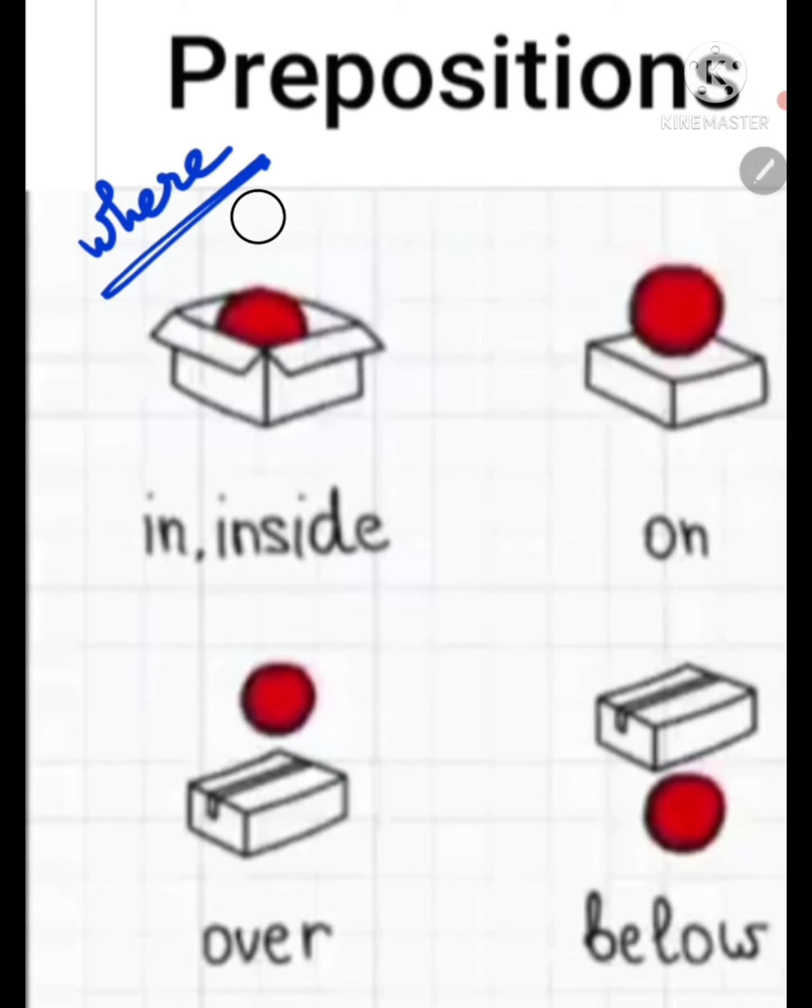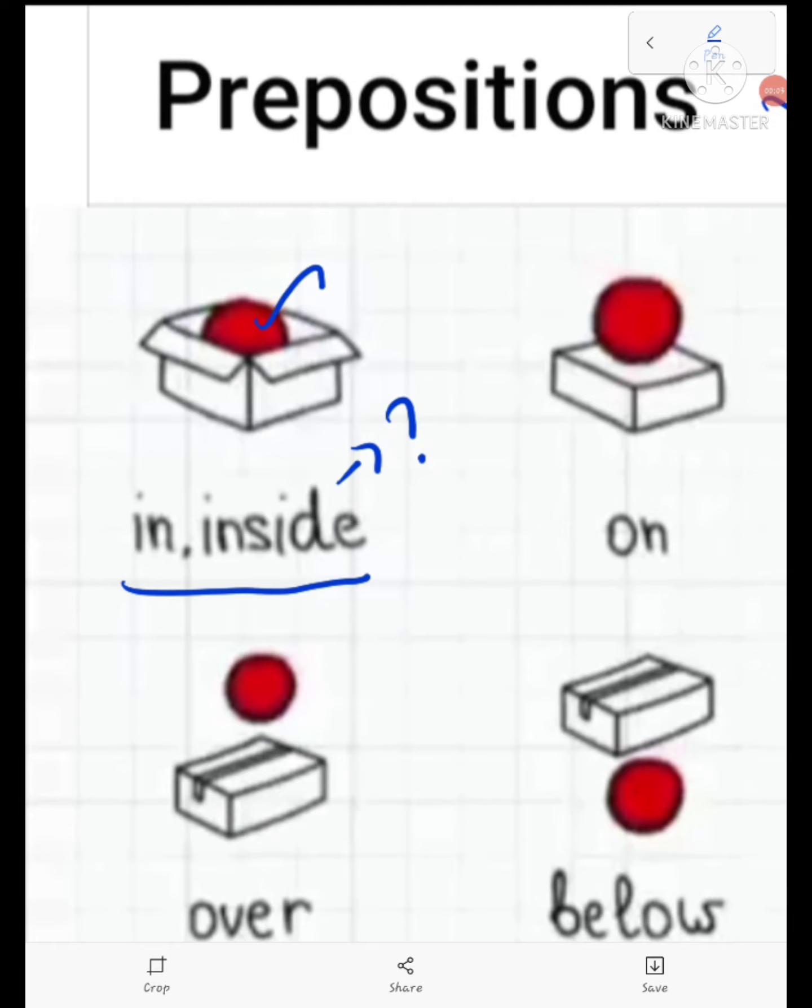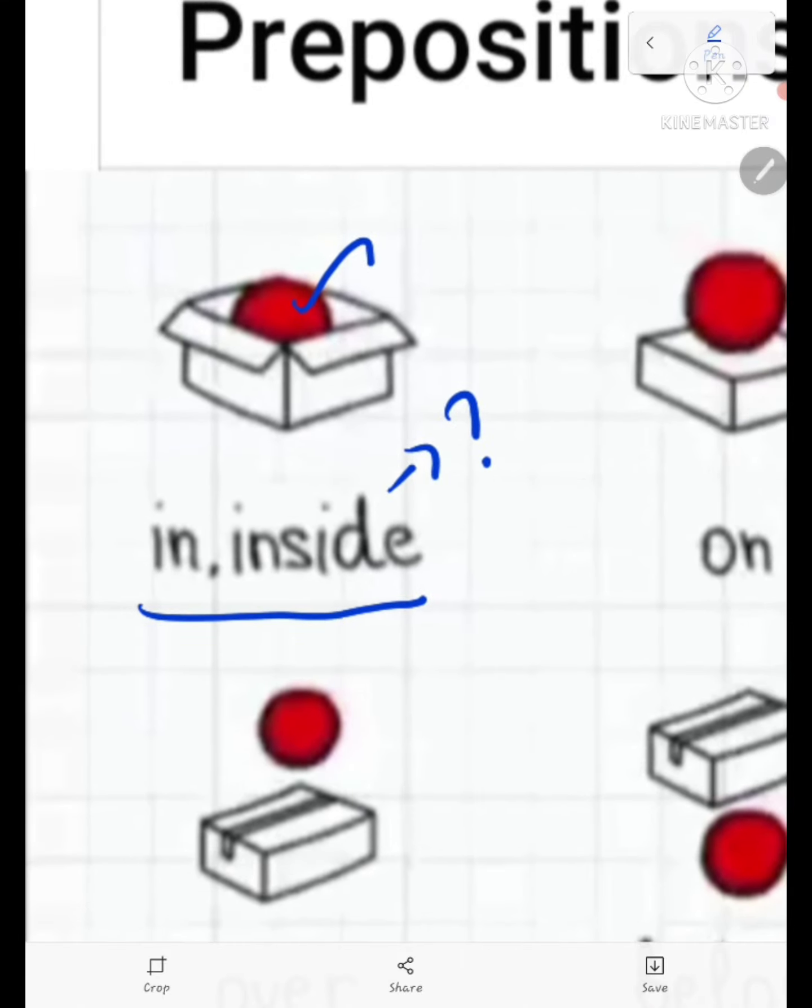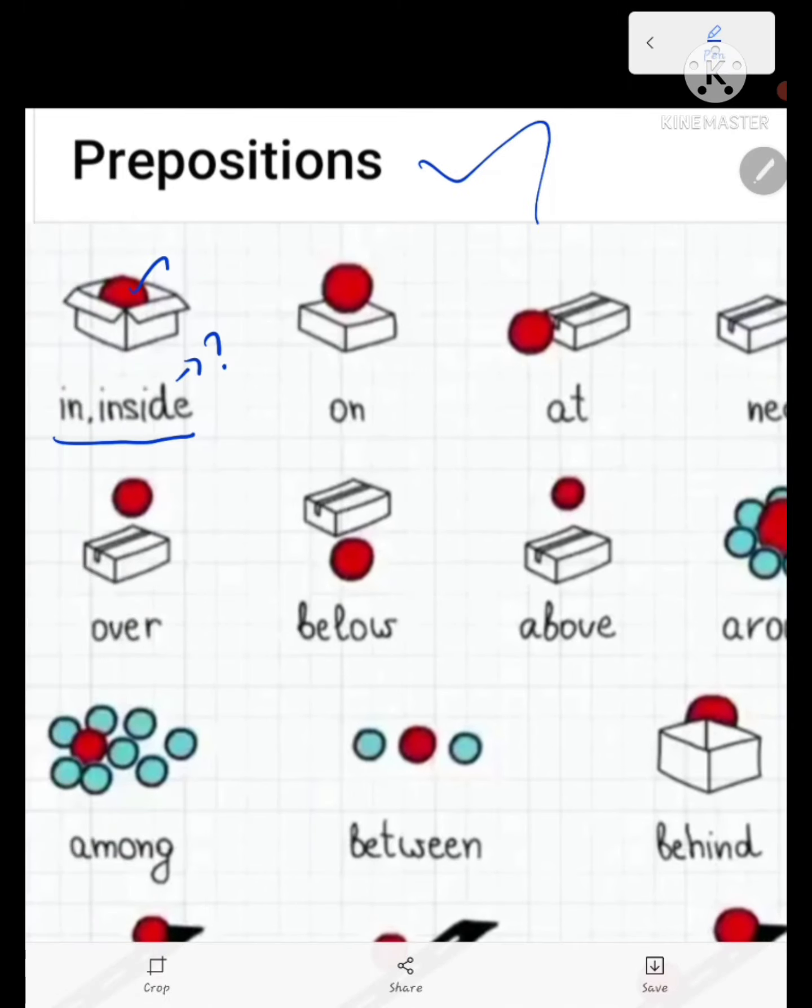Look at this first picture. Where is the ball? It is in the box or it is inside the box. What is the meaning of in and inside? Do you know? Yes, in the ball box. This is the position of the ball that is inside the box or in the box.